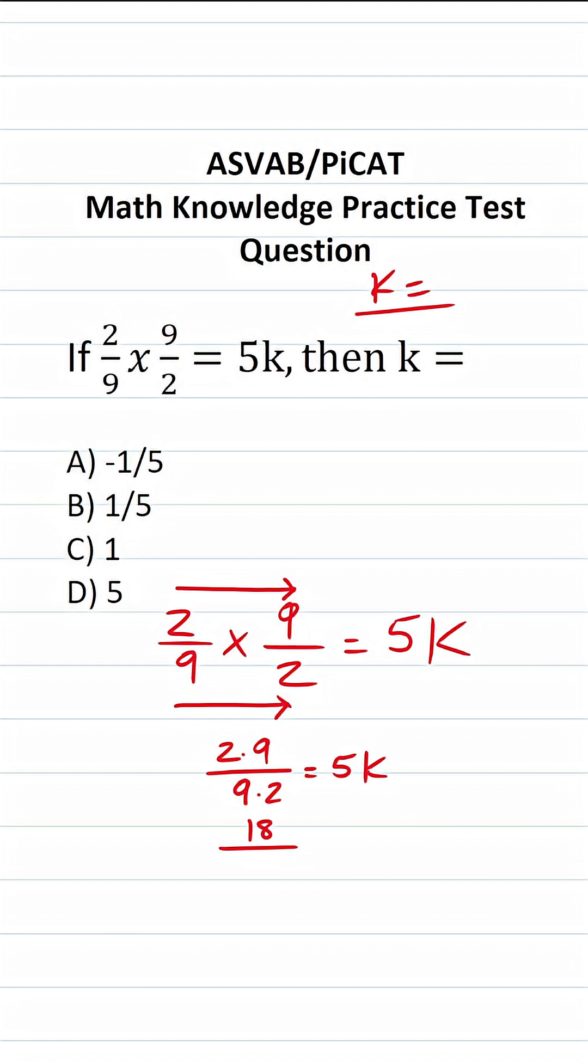2 times 9 is 18. 9 times 2 is 18 equals 5k. 18 divided by 18 is 1 equals 5k.